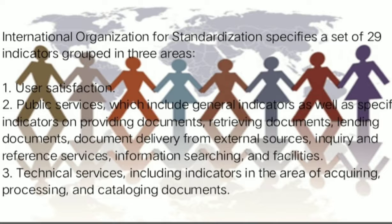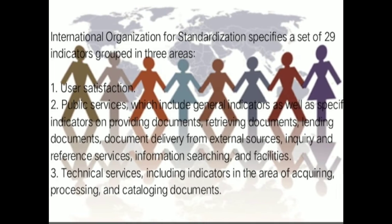First is user satisfaction. Second, public services, which include general indicators as well as specific indicators on providing documents, retrieving documents, lending documents, document delivery from external sources, inquiry and reference services, information searching, and facilities. Third, technical services, including indicators in the area of acquiring, processing, and cataloging documents.